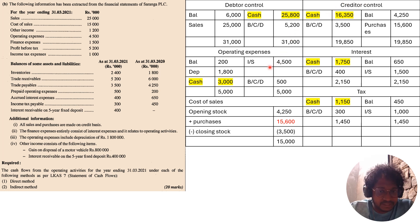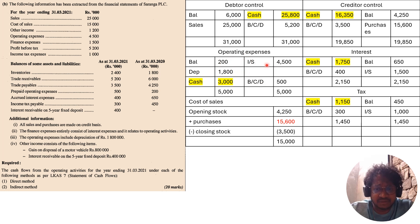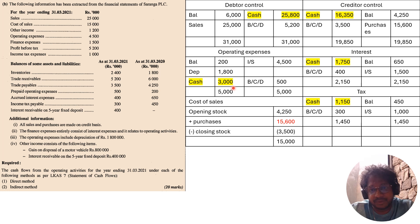Next are operating expenses. The operating expenses from the income statement are 4,500, but this 4,500 includes depreciation of 4,800. The prepaid operating expenses opening and closing balances are given. You have to debit depreciation to the operating expenses account, and then you can find out the actual amount paid for operating expenses in cash, which is a cash outflow under operating activities.